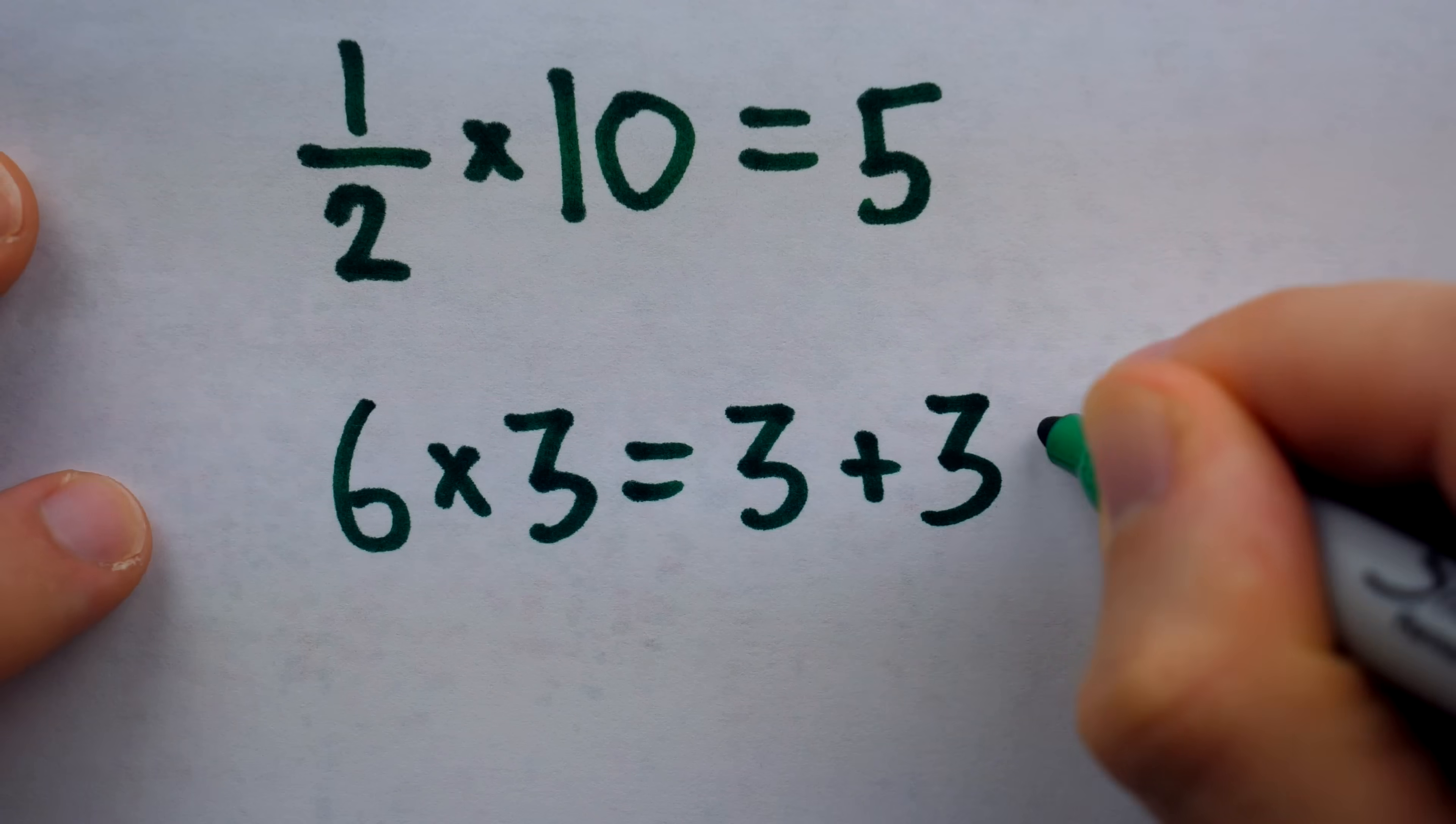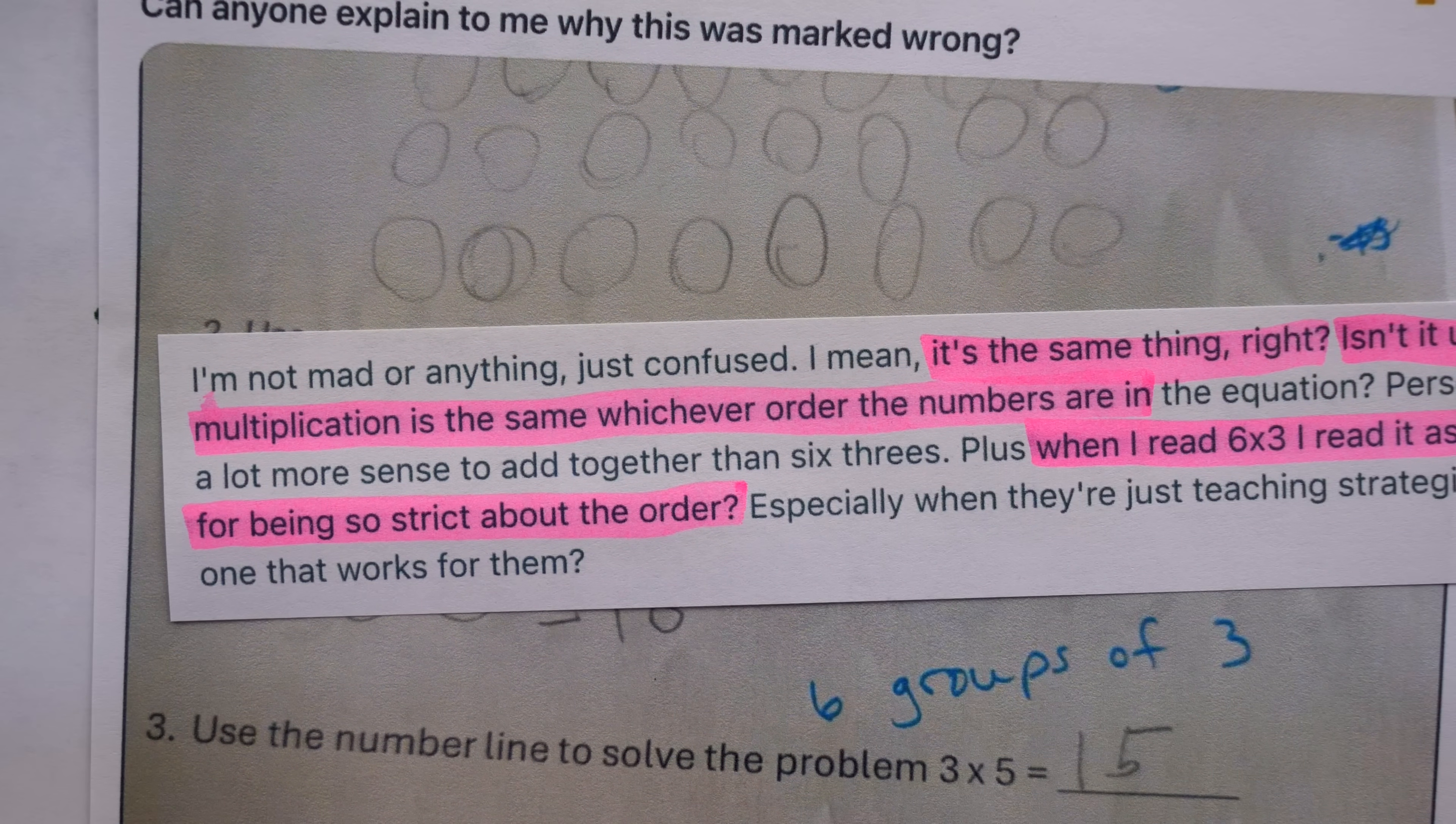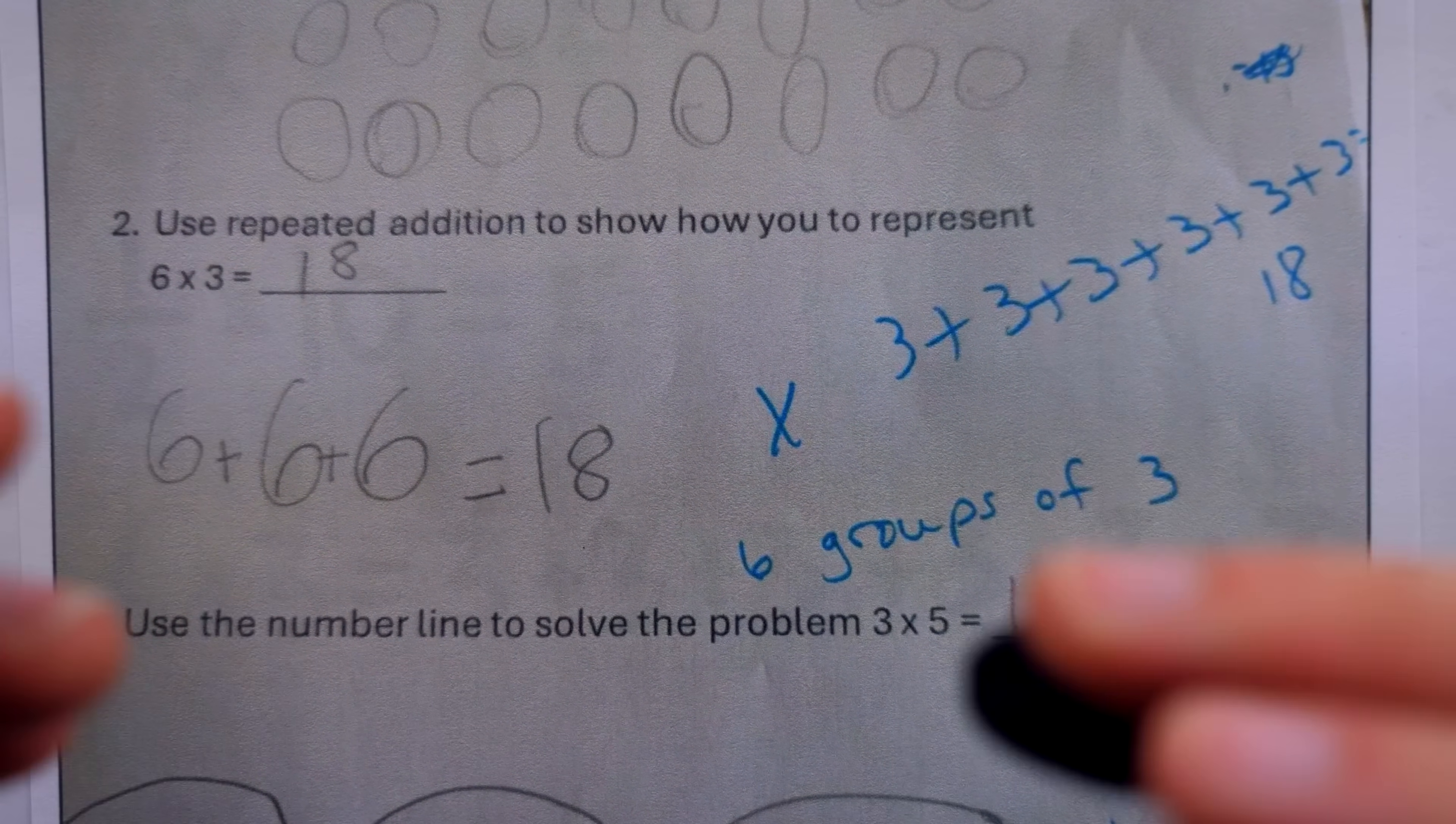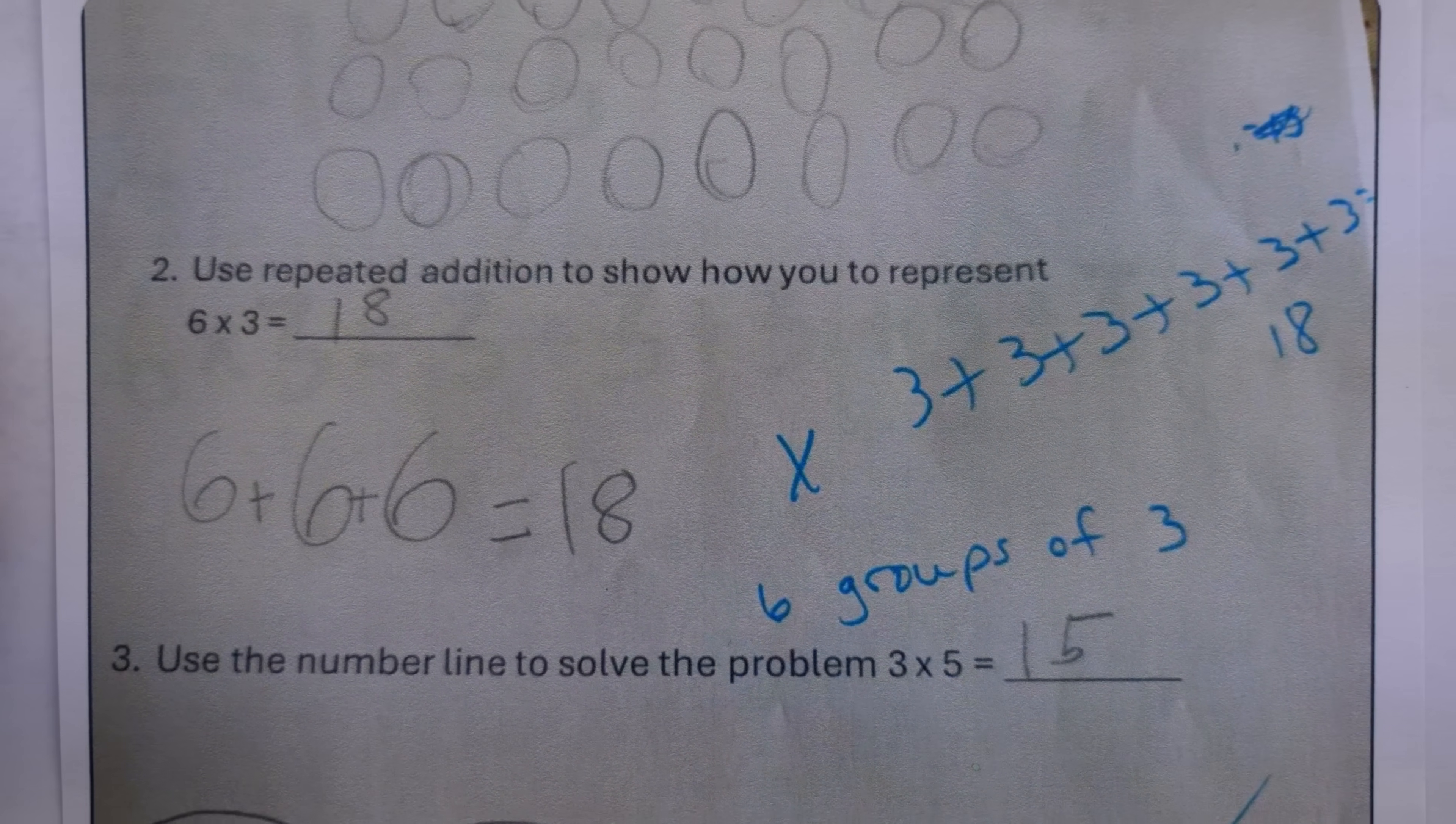which would mean 6 copies of 3. And then really the key question, is there a reason for being so strict about the order? I'd say yes, there is a reason, which we'll discuss, but whether or not that reason justifies losing all points on a question like this is where people will certainly disagree.